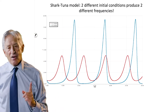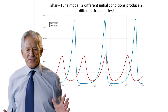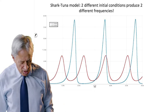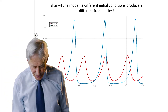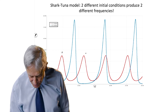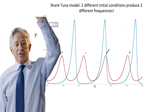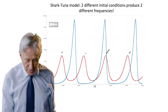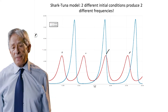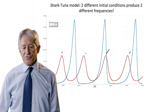That's not a property of the Shark-Tuna system. If you give a small initial condition, you have a certain number of oscillations. If you give a larger perturbation, you have a different frequency. So this would be a terrible musical instrument.